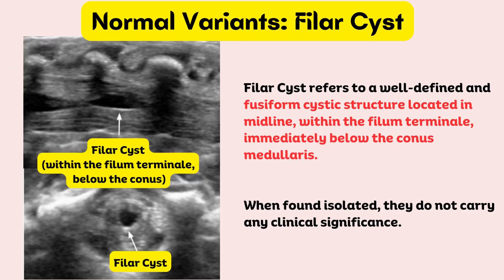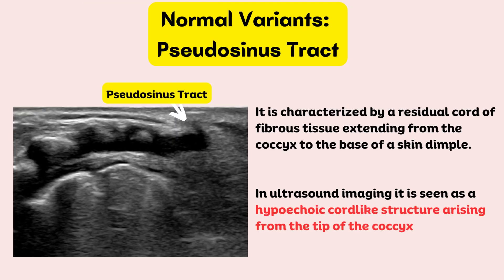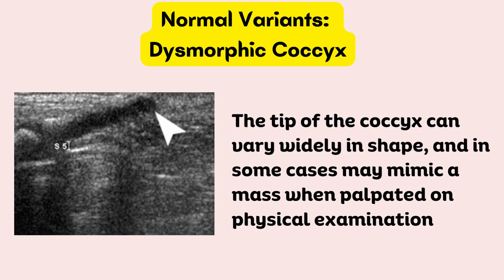Phyllocyst refers to a well-defined, fusiform cystic structure located in the midline within the filum terminale, immediately below the conus medullaris; when found in isolation, it does not carry any clinical significance. Pseudosinus tract is characterized by a residual cord of fibrous tissue extending from the coccyx to the base of a skin dimple; on ultrasound imaging it is seen as a hypoechoic cord-like structure arising from the tip of the coccyx. The tip of the coccyx can vary widely in shape and in some cases may mimic a mass when palpated on physical examination.